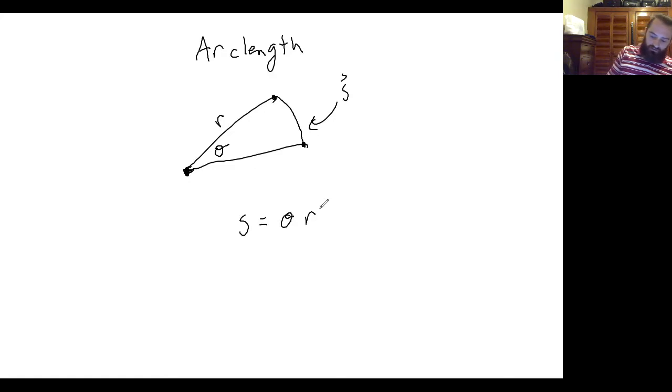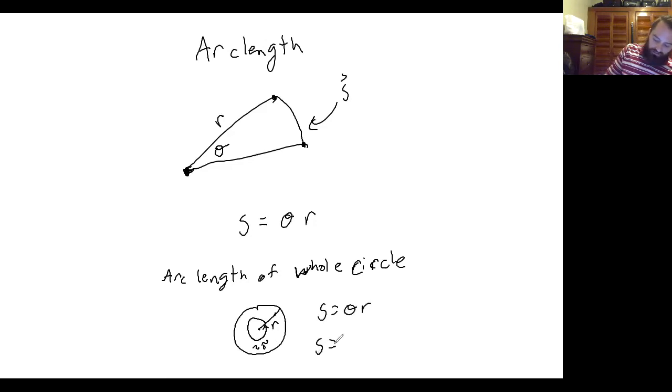And we can check this. So what if we wanted the arc length of the whole circle? So the circle has some radius r and we know that if you go all the way around, you've done two pi radians. So the arc length s would be the angle theta times r. Going all the way around, the angle is two pi radians times r, and that is the circumference of the circle.